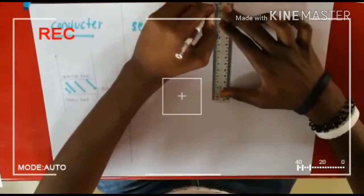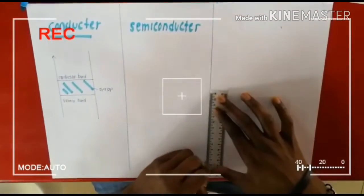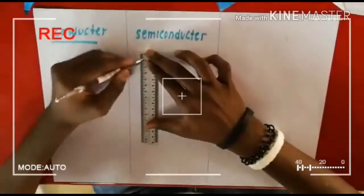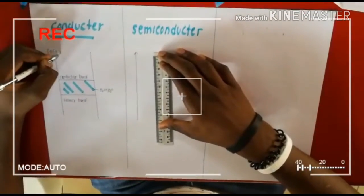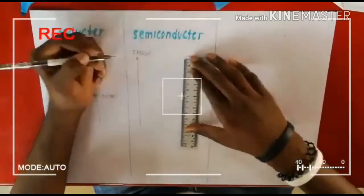For conductors, there is no energy gap available. The valence band and the conduction band overlap each other, so the electrons in the valence band can freely move to the conduction band. Due to the small amount of energy, there is a continuous flow of electrons in the conduction band.